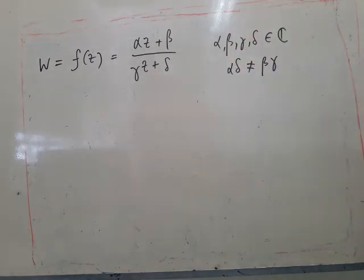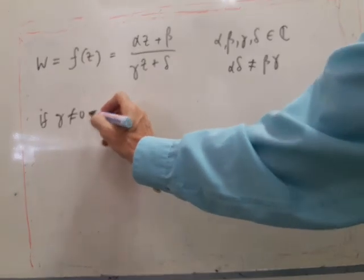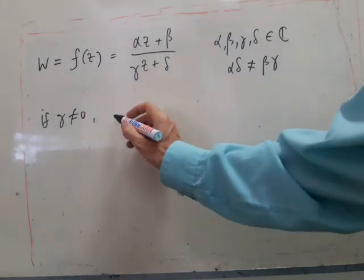It turns out that this is actually a combination of all the transformations we've looked at so far. If gamma is not zero, so it's not a linear transformation, then it turns out that this transformation, we can now test this.